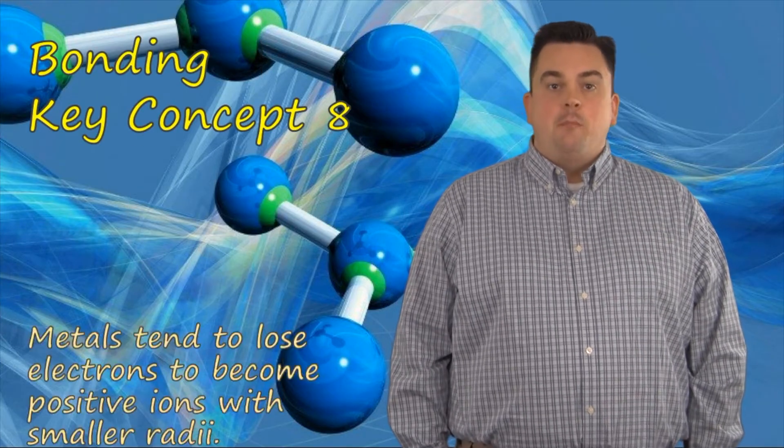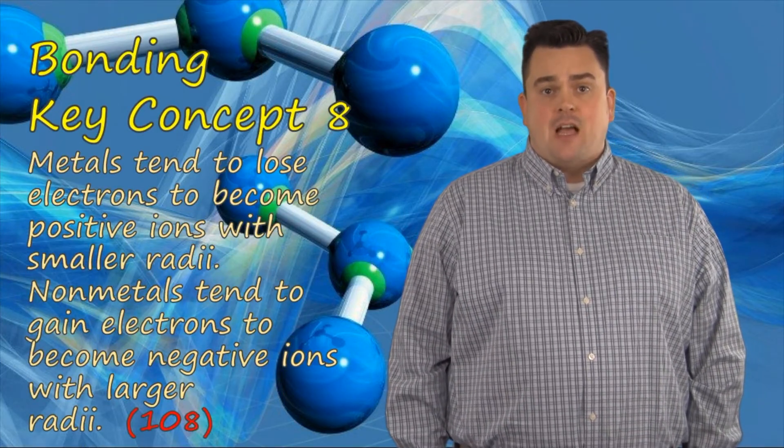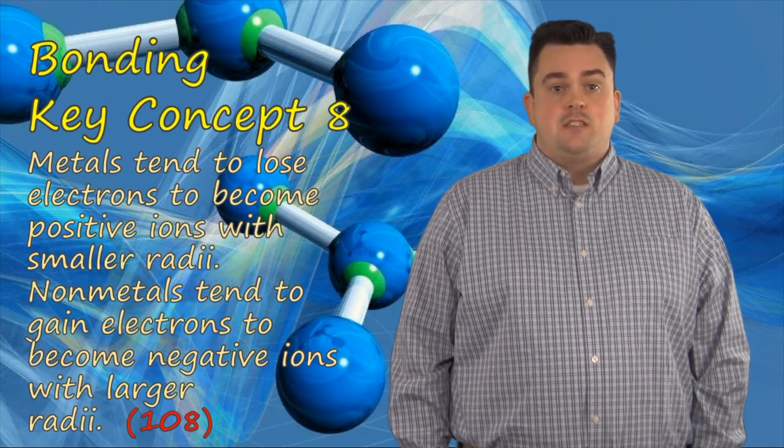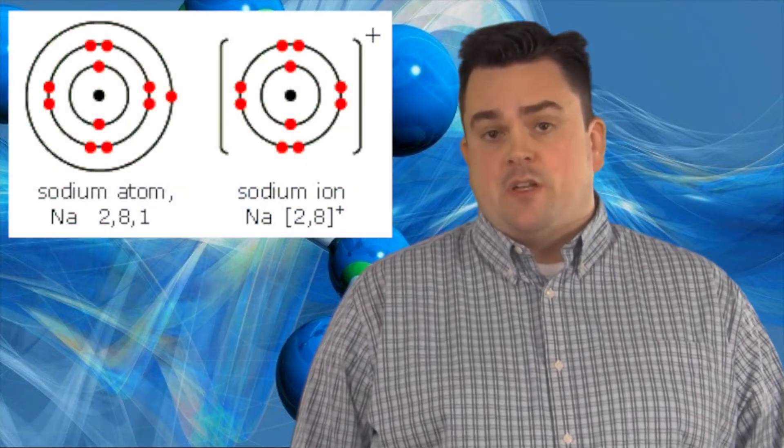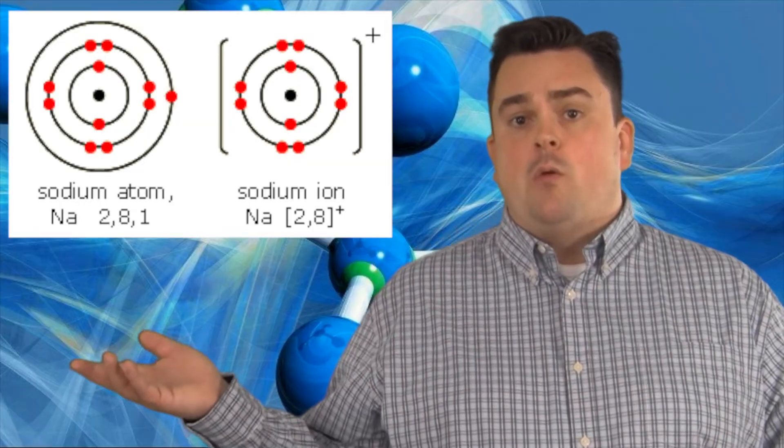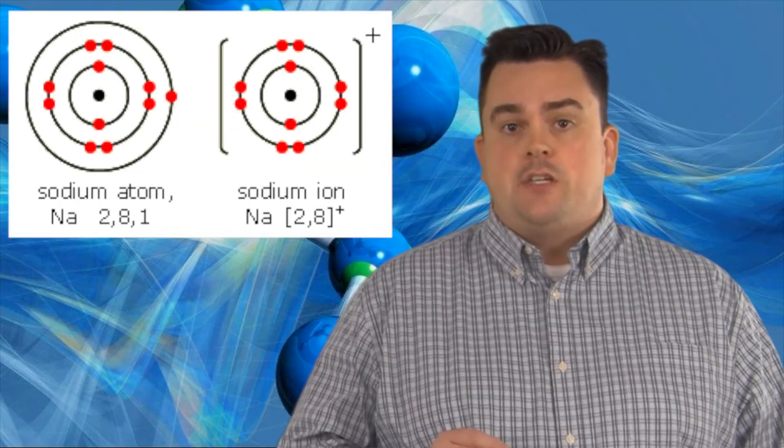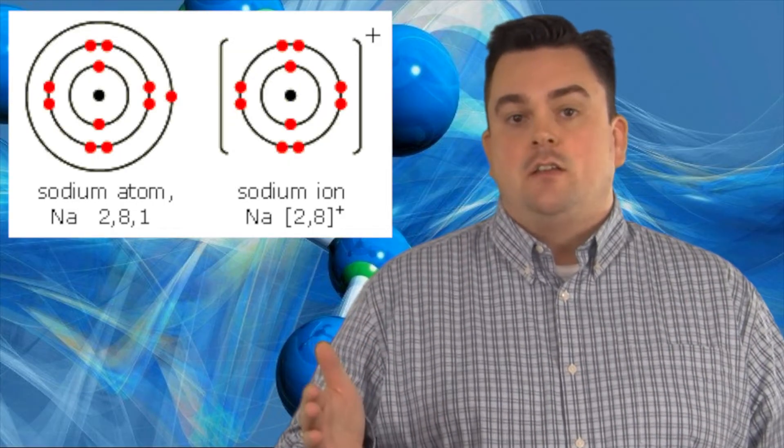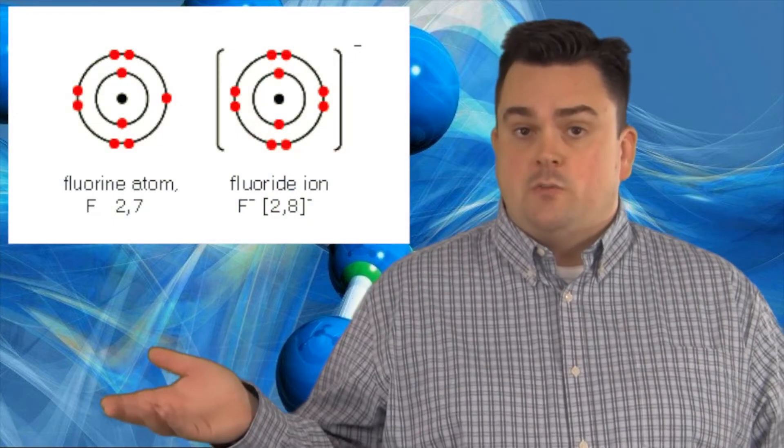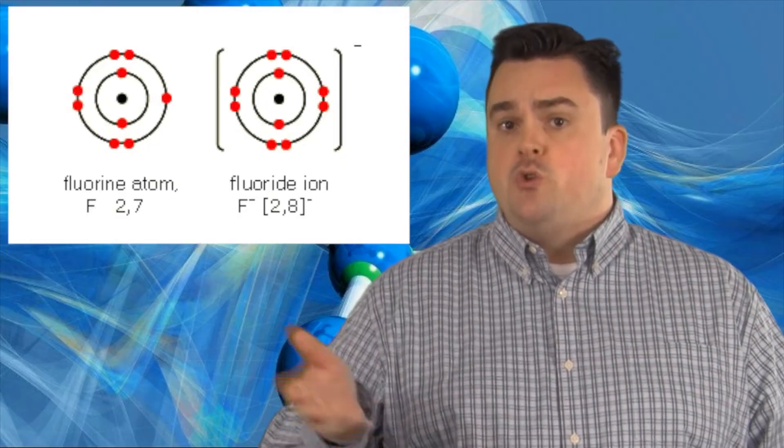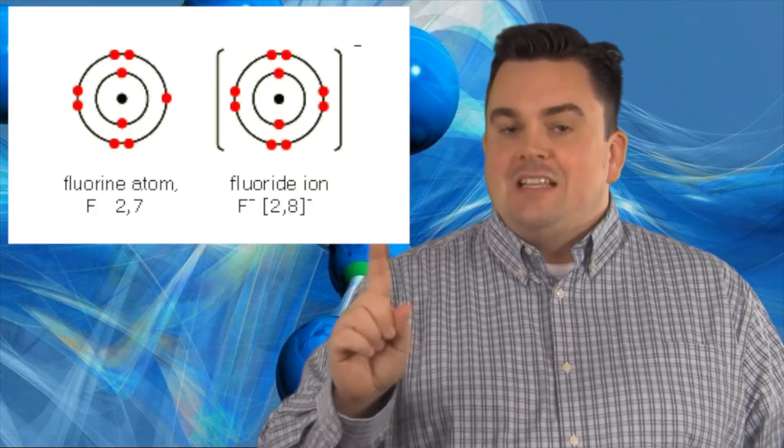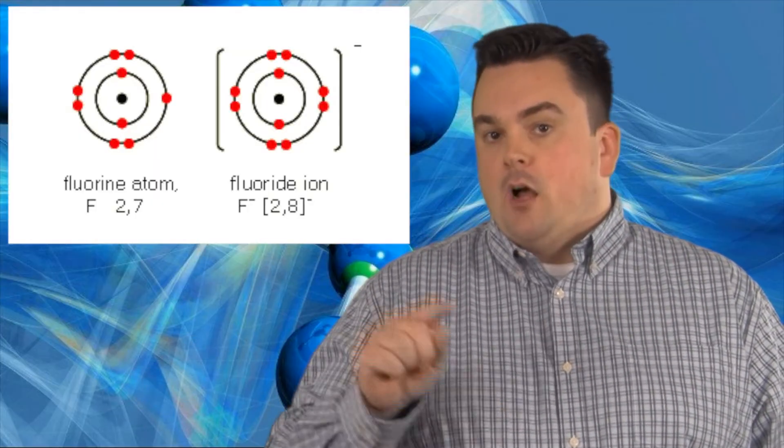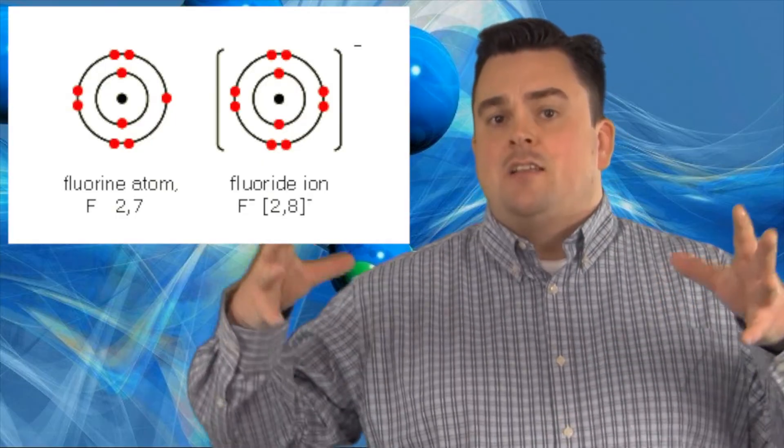Bonding key concept eight. Metals tend to lose electrons to become positive ions with smaller radii. Non-metals tend to gain electrons to become negative ions with larger radii. Sodium, for example, has an electron configuration of 2-8-1. When it loses that one electron in its outer shell, it loses an entire shell. It becomes a smaller ion. Non-metals, like fluorine for instance, which has an electron configuration of 2-7, when it gains that electron, it's not gaining an extra shell, but it is gaining an electron in that shell. And all those electrons are repelling on each other, effectively making the radius larger.